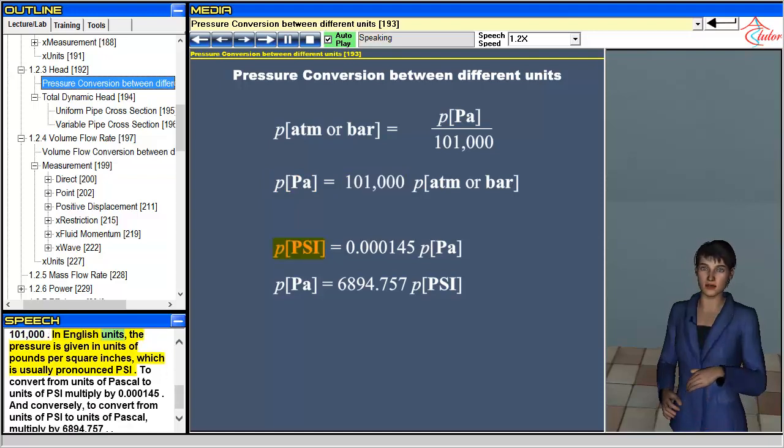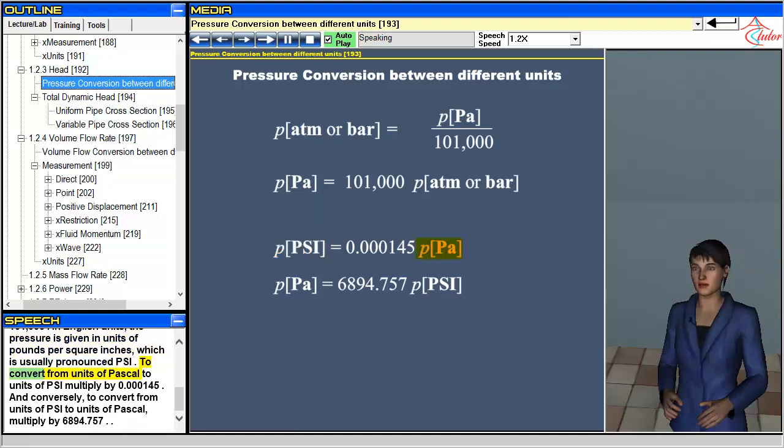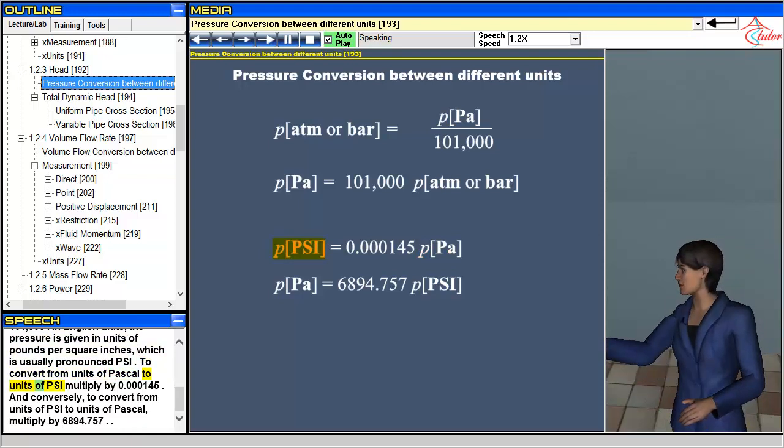In English units, the pressure is given in units of pounds per square inches, which is usually pronounced PSI. To convert from units of pascal to units of PSI, multiply by 0.000145.